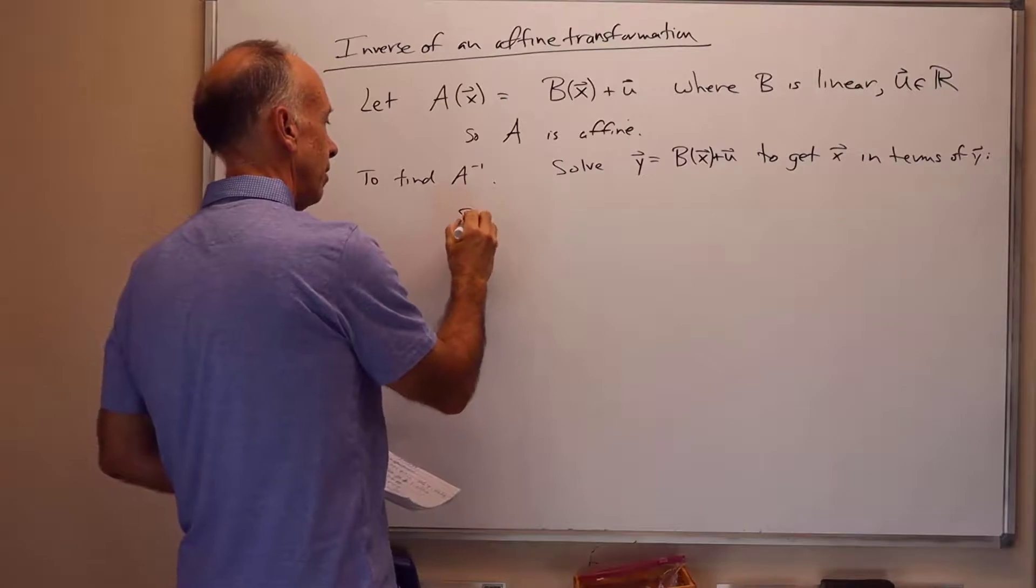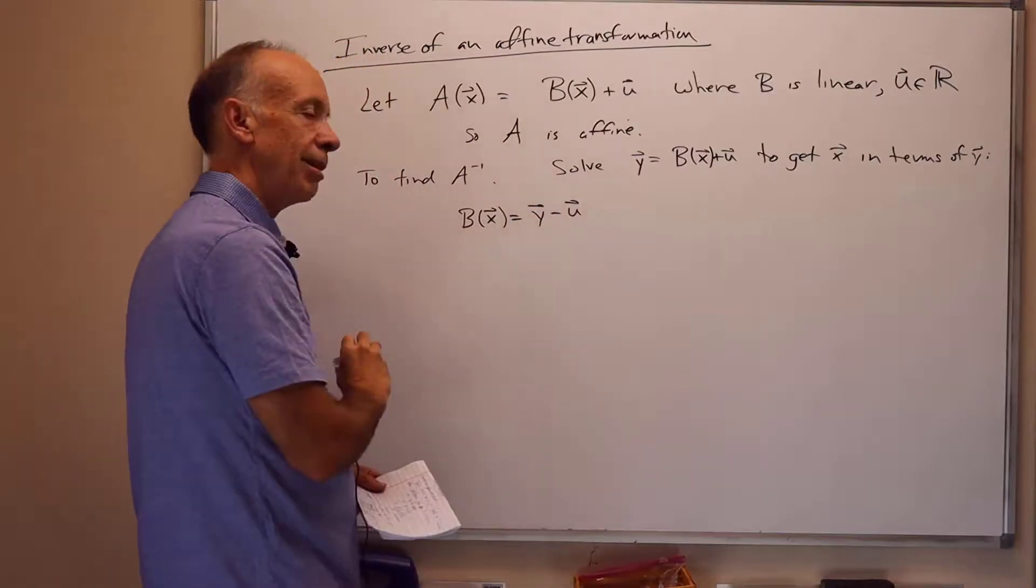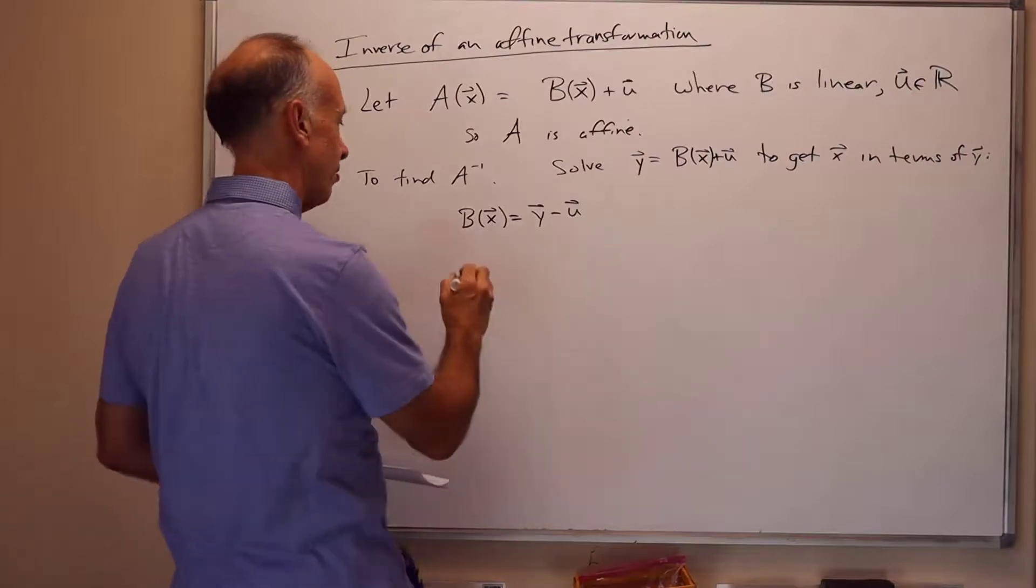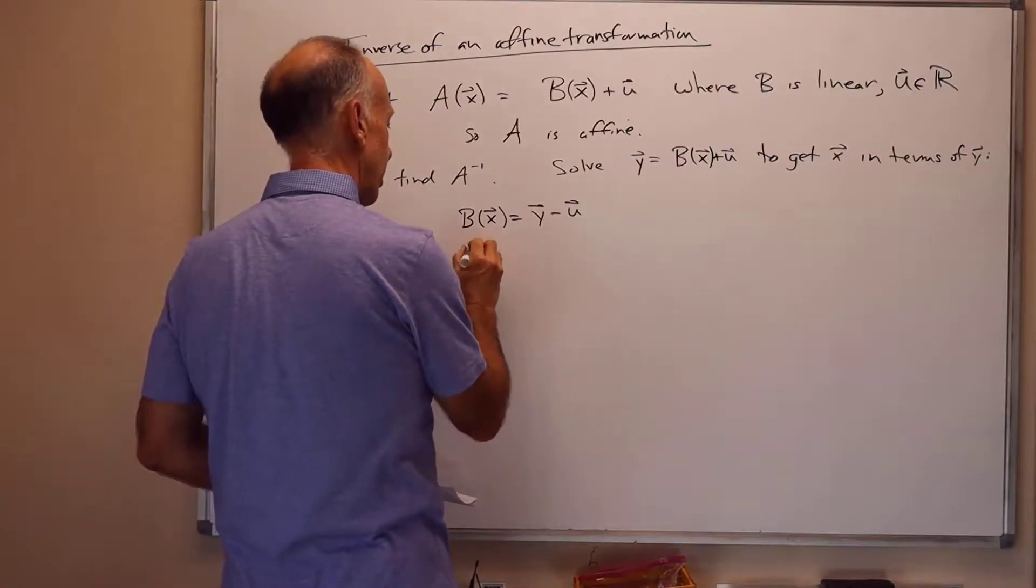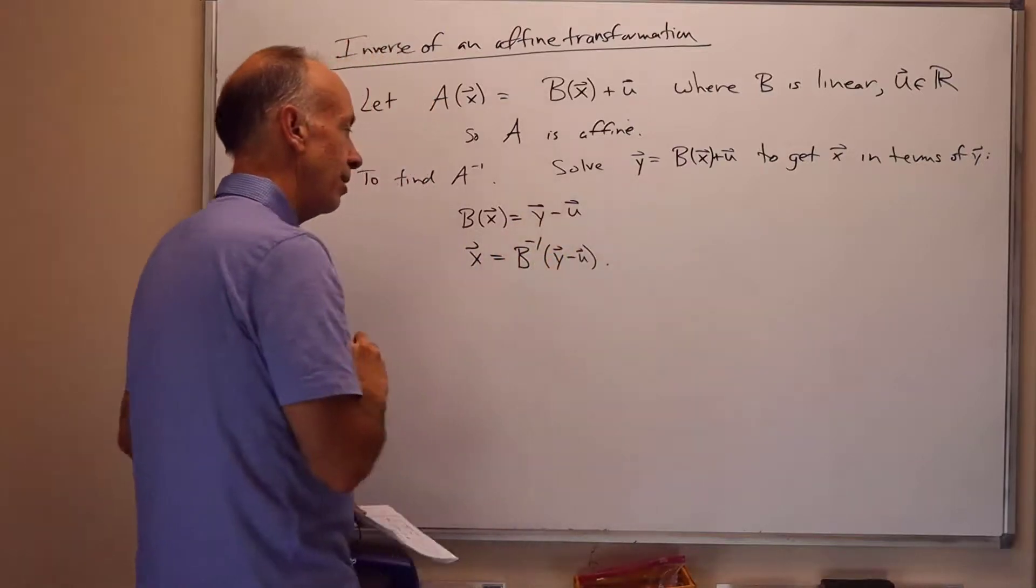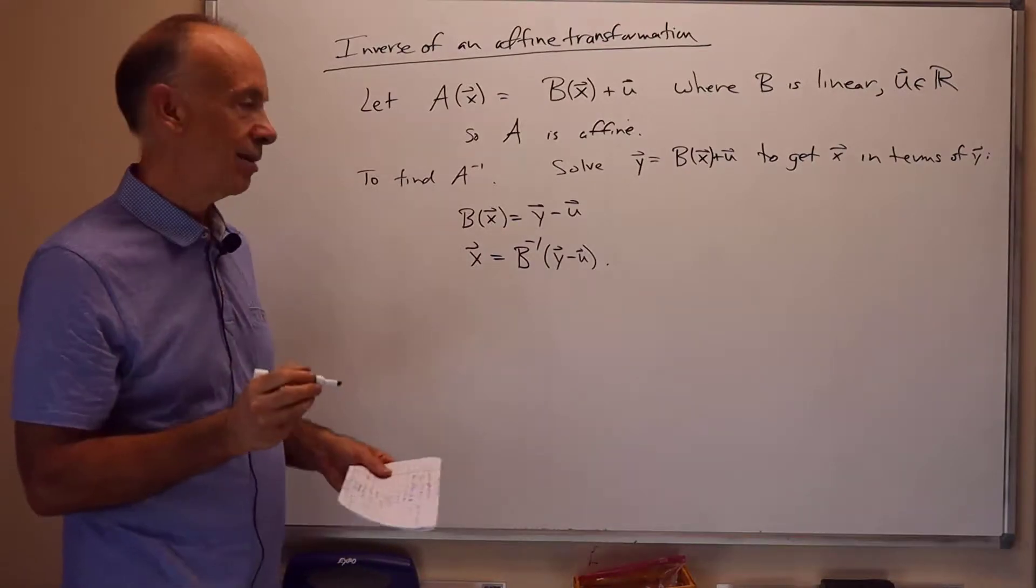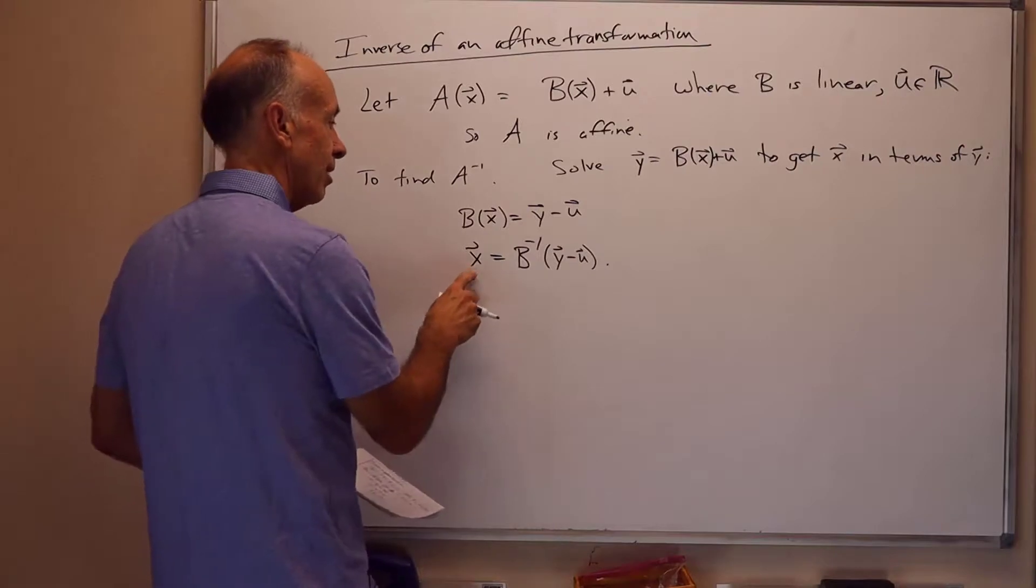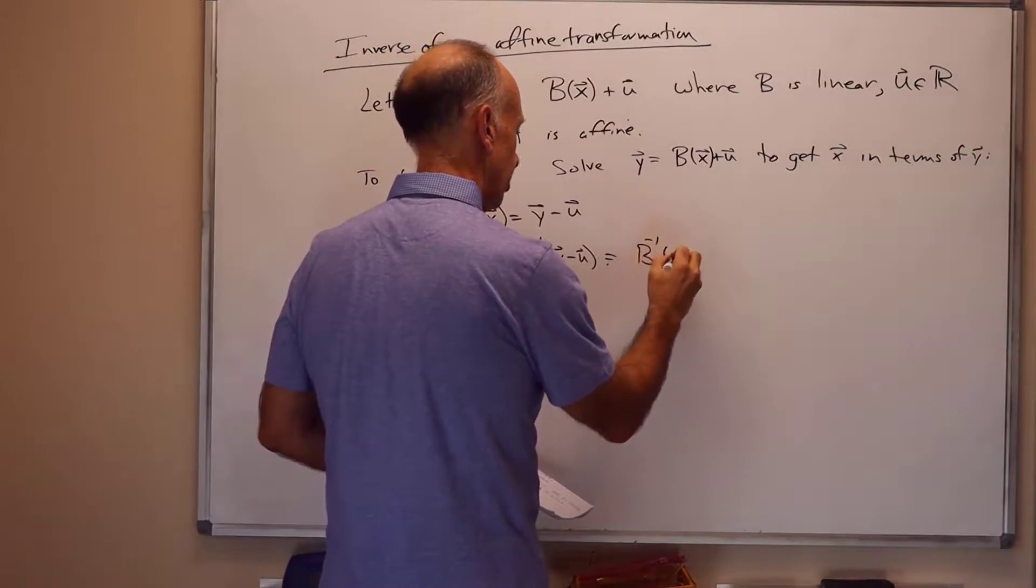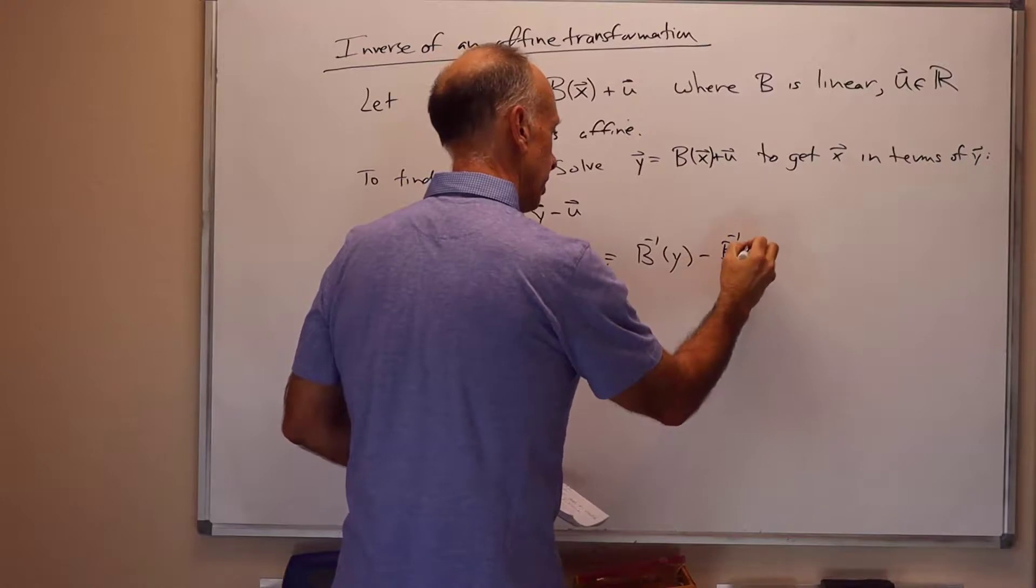This gives us that Bx equals Y minus U. We hit both sides with B inverse. And remember, B is linear. We already discussed how to find inverses of linear transformations. So, that tells us that x is equal to B inverse of Y minus U. Now, the inverse of a linear map is still a linear map, assuming it's not degenerate, so it exists. This is equal to B inverse of Y minus B inverse of U.